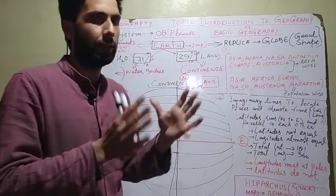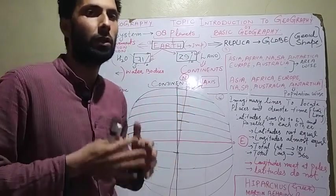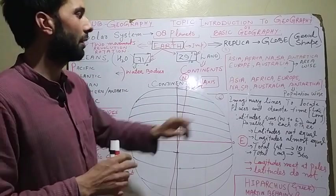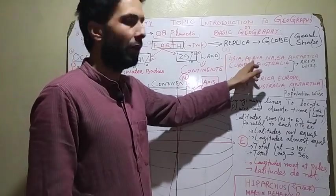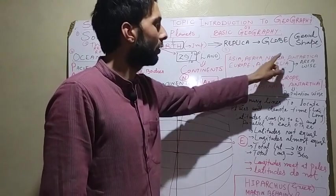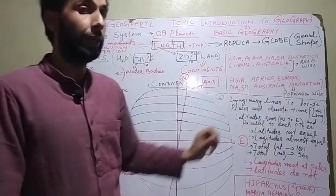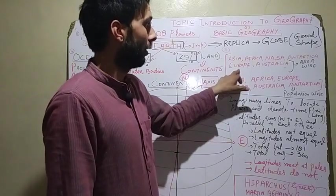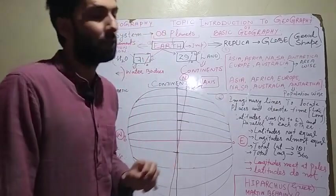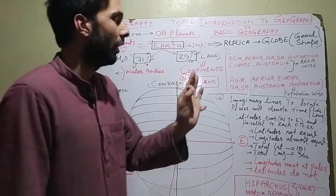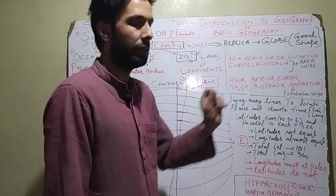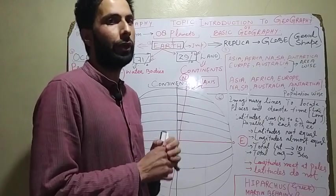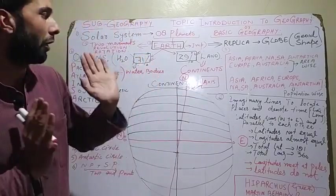Area-wise, the first number is Asia — it is the largest continent by area. Then comes Africa, then North America, then South America, then Antarctica. Remember, Antarctica has quite good land area. Then at sixth number is Europe, and at seventh — the smallest continent by area — is Australia. So if asked: area-wise smallest continent? Australia. Area-wise largest continent? Asia.